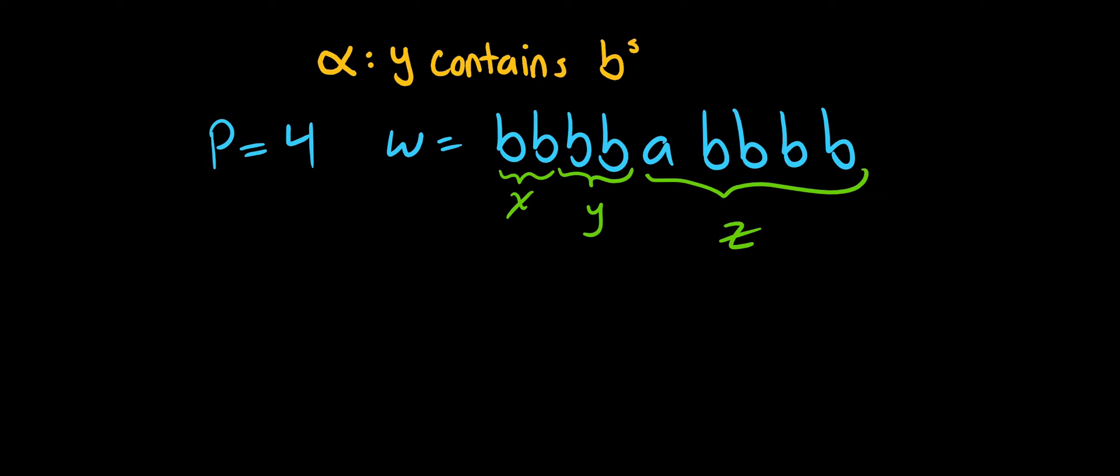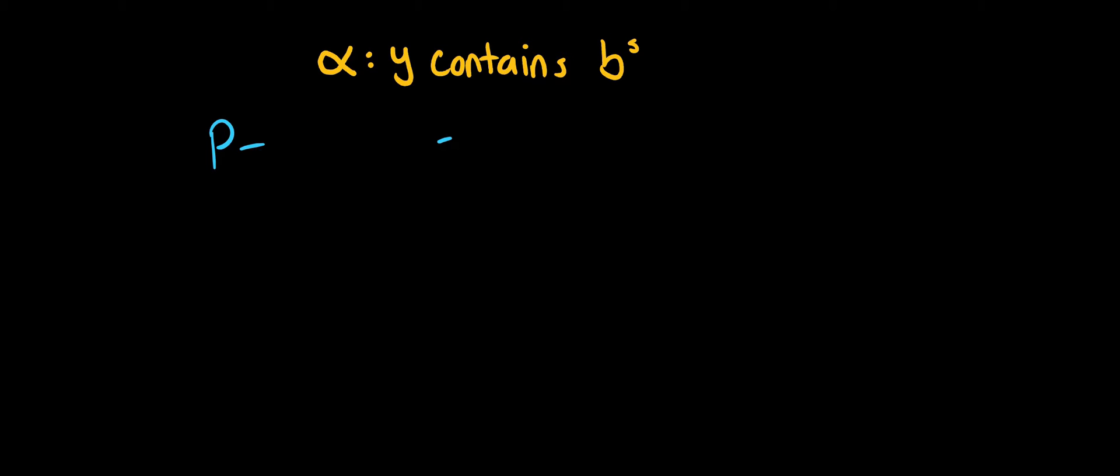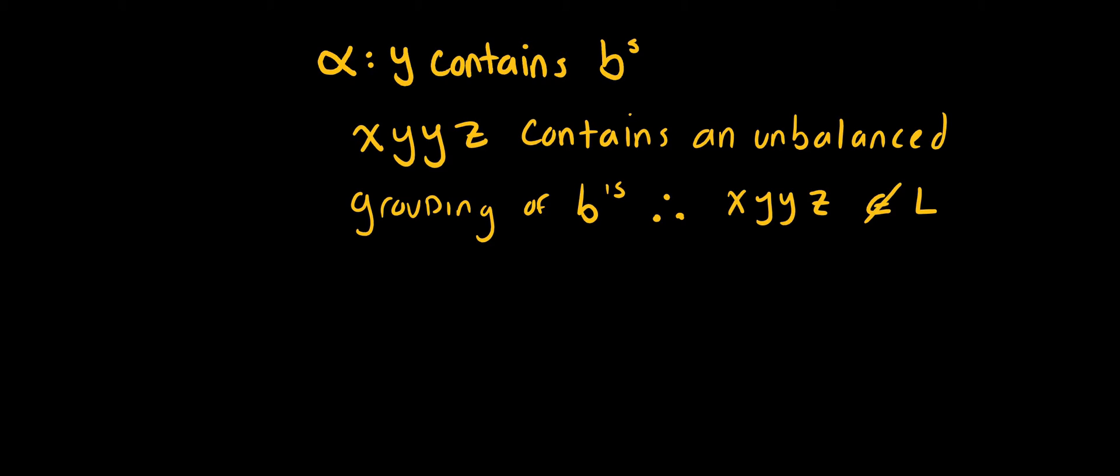So most of you probably wouldn't even need to choose a value for P. You should be able to intuitively see that this is the case, but sometimes it does help to pick an arbitrary value for P. And then for the proof, you would write something along the lines of XY^2Z contains an unbalanced grouping of B's, therefore, this symbol means therefore, XY^2Z is not in the language L.